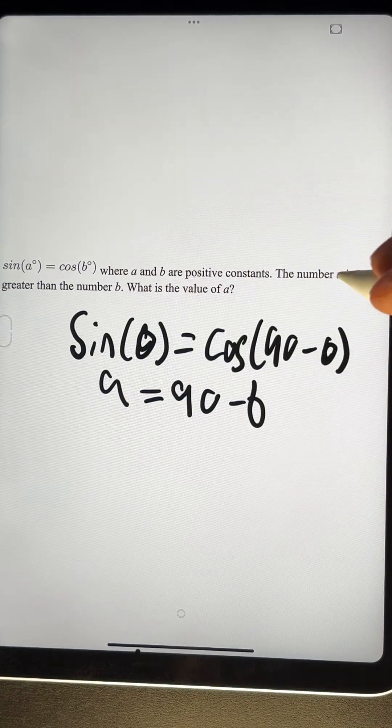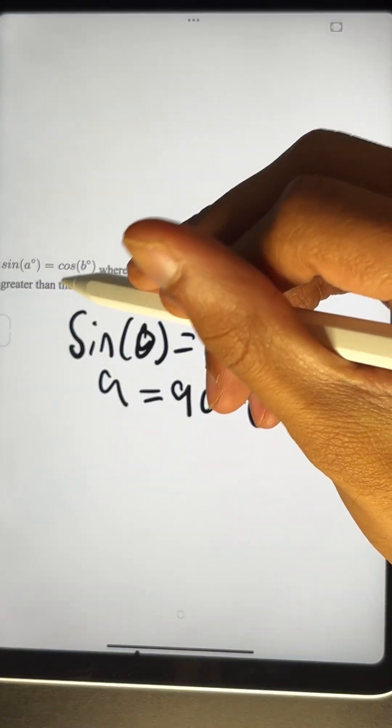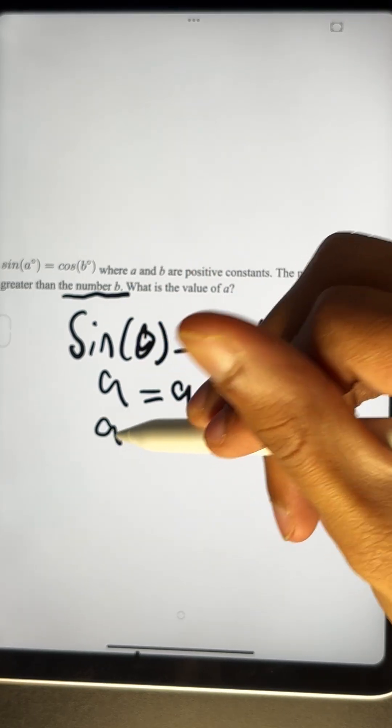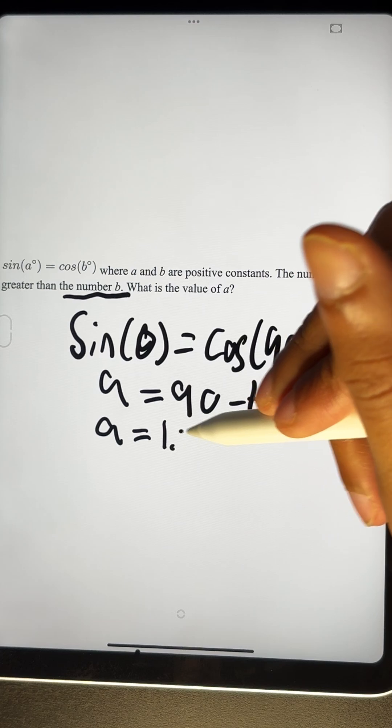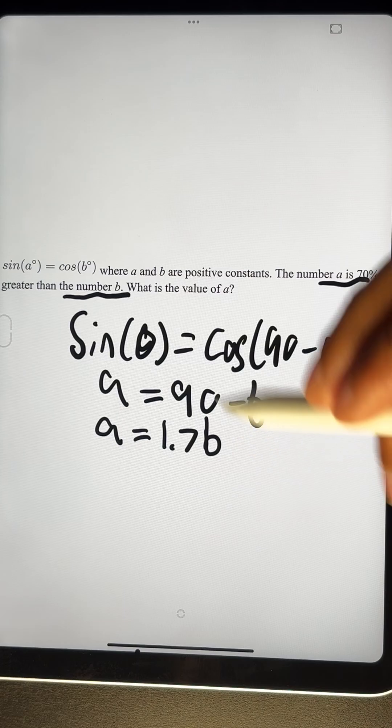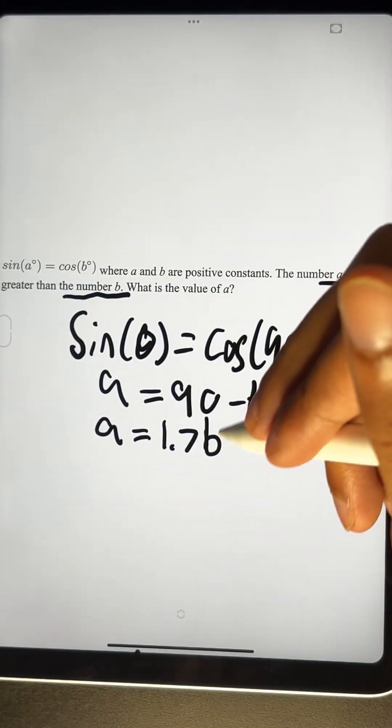OK, we also know that A is 70% greater than B. That means that A is going to be equal to 1.7 times B because 1.7 is 70% greater. So now we can set these equal.